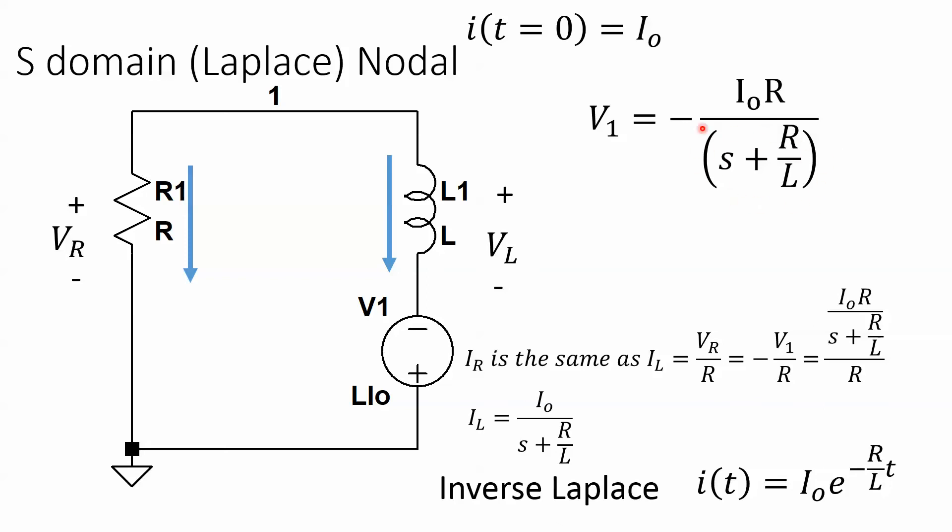Now we notice that I_R is still going to be the same as I_L. Maybe I've got these going in the opposite directions, but really it's still a series circuit, so it's the same. All I have to do is take V_1 or V_R, divided by R, which in this case it's defined backwards. So I get minus V_1 divided by R, put all that through, I'm back to this equation again. Take the inverse Laplace, I have my exponential decay.